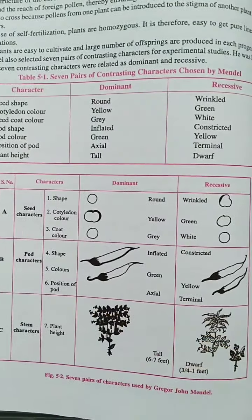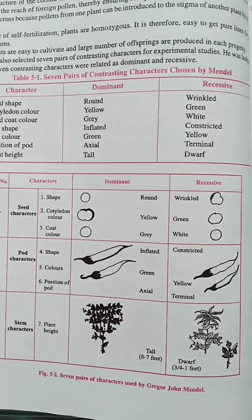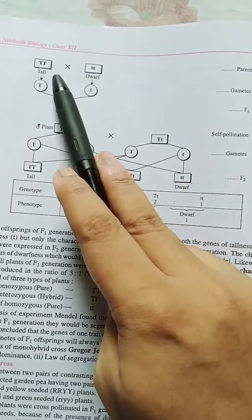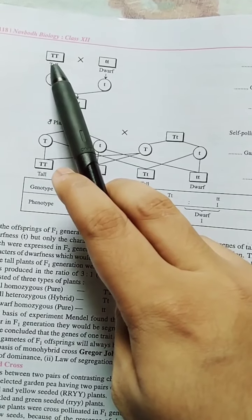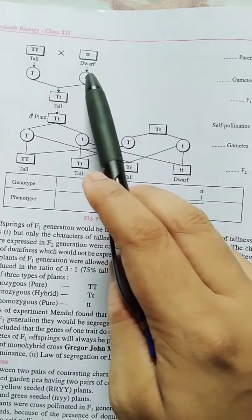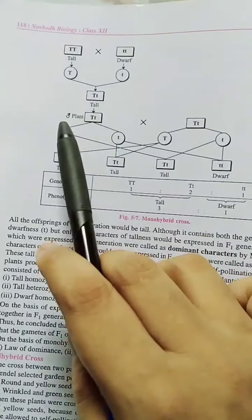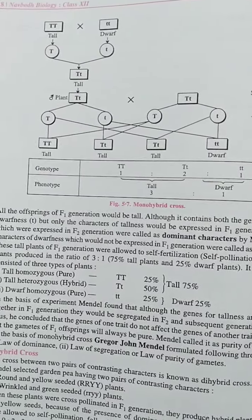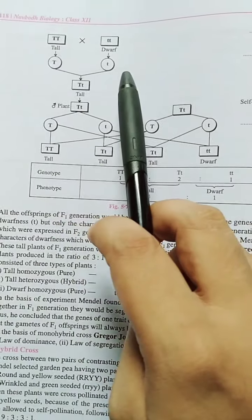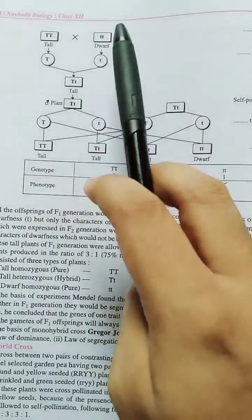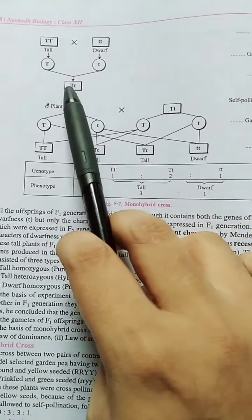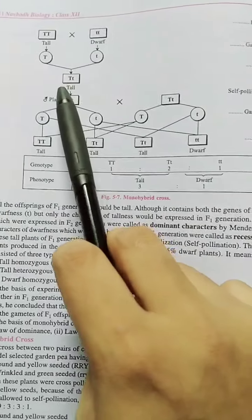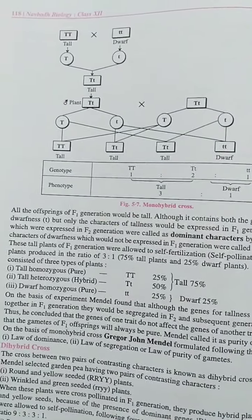Right now on your screen, there are two contrasting plants — a tall plant and a dwarf plant. For the tall plant, we define its genotype as capital T, capital T (TT). For the dwarf plant, we define it as small t, small t (tt). The ones which are dominant we define with capital letters. These are the parents and they will produce the respective gametes. For the tall plant, the gamete will be capital T; for the dwarf plant, it will be small t. In the F1 generation, they will produce a hybrid that is capital T, small t (Tt). The phenotypic expression is tall — the plant will be tall in nature.